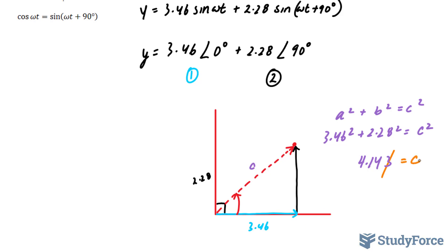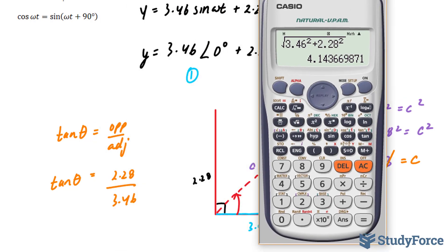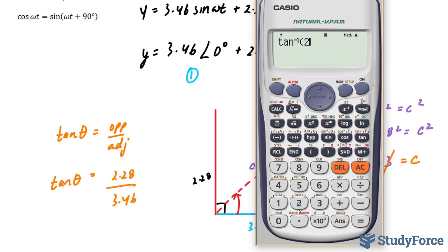That will serve as our amplitude for our new sine wave. And to find out this angle, we'll have to use trigonometric functions, namely tangent. Tangent theta is opposite over adjacent. Our opposite is 2.28 and our adjacent is 3.46. We'll have to tan inverse both sides. That will give us our angle. So the tan inverse of 2.28 divided by 3.46 gives us 33.38 degrees.